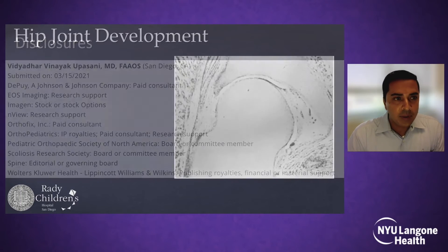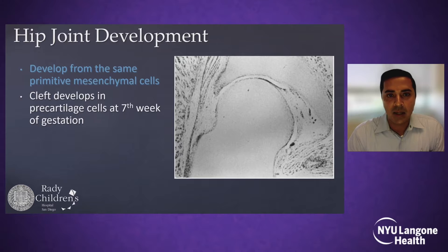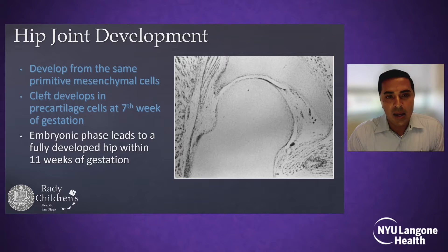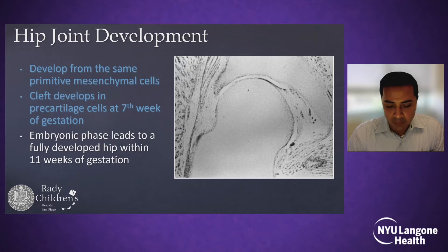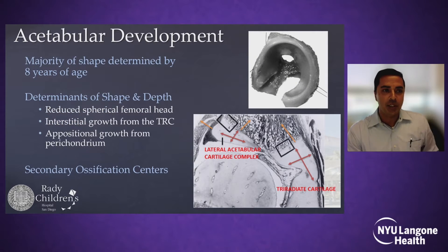Disclosures, but nothing relevant to this talk. We've spent a little bit of time talking about the hip joint developing as one intact analog with a cleft that forms and then fully developed by 11 weeks of gestation.